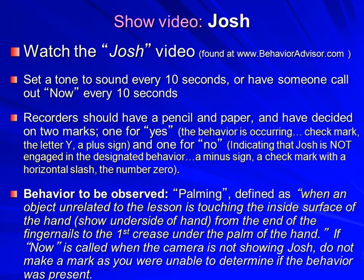The behavior to be observed: someone says he engages in a lot of 'palming behavior.' What is palming behavior? We should focus on the definition, not what we call it. Here is our observable and measurable definition: palming is when an object that has nothing to do with the lesson is touching the inside surface of the hand — from the end of the fingernails down to the first crease under the palm. If 'now' is called when the camera is not showing Josh, don't make a mark, because you weren't able to observe at that moment. Later, figure out the percent of moments the behavior was happening.